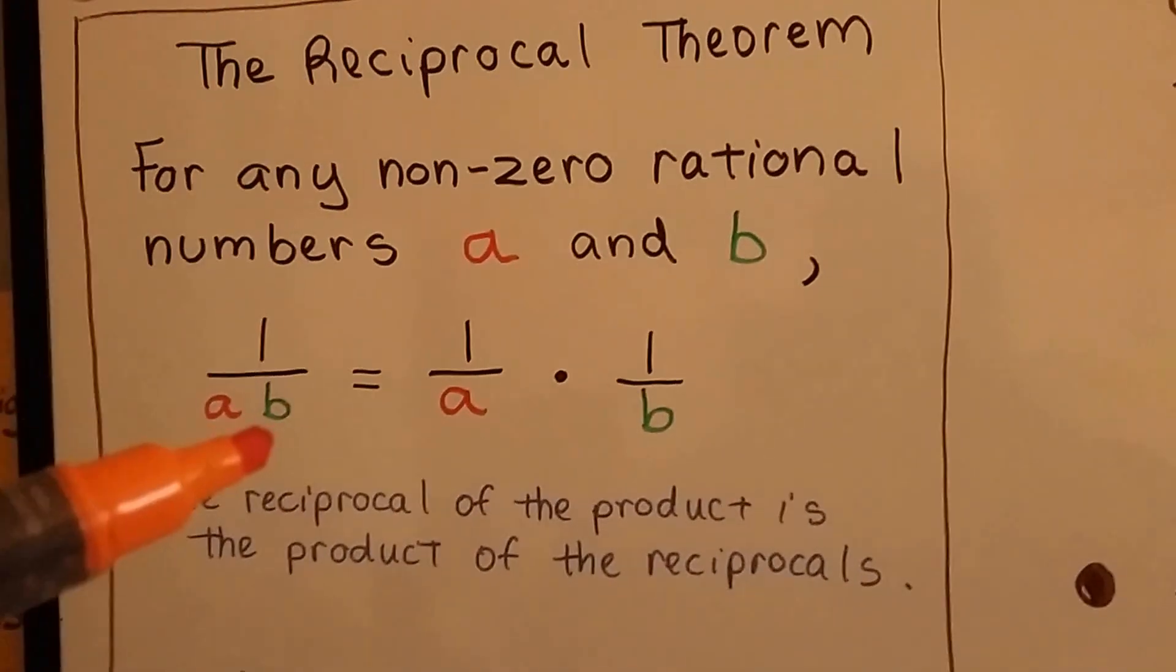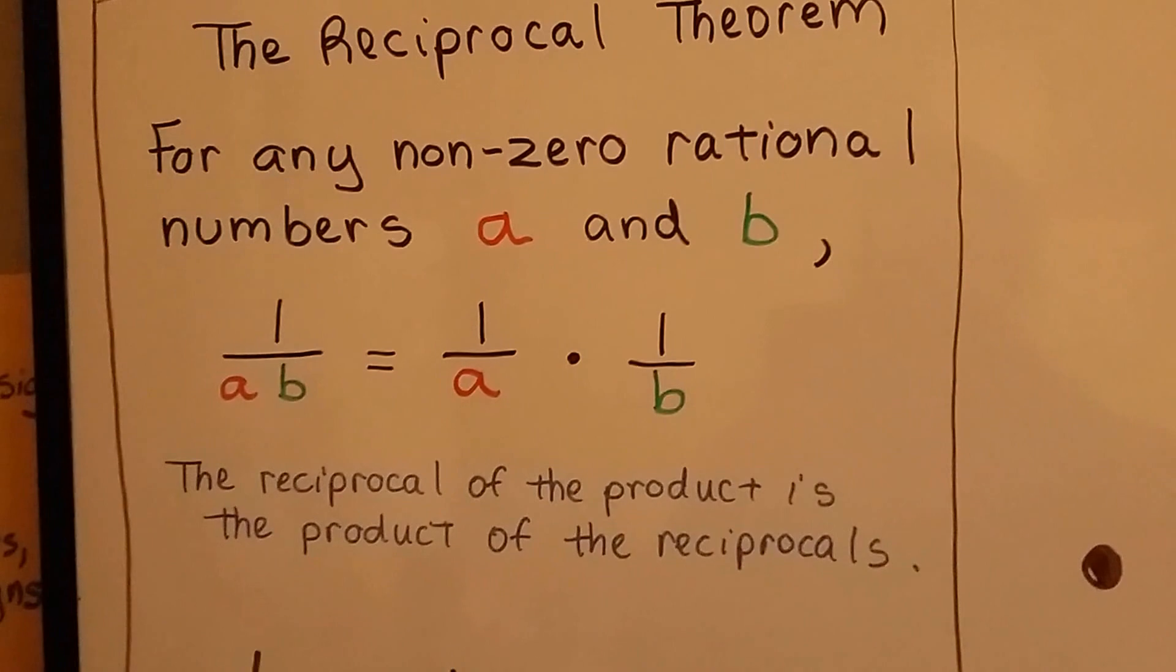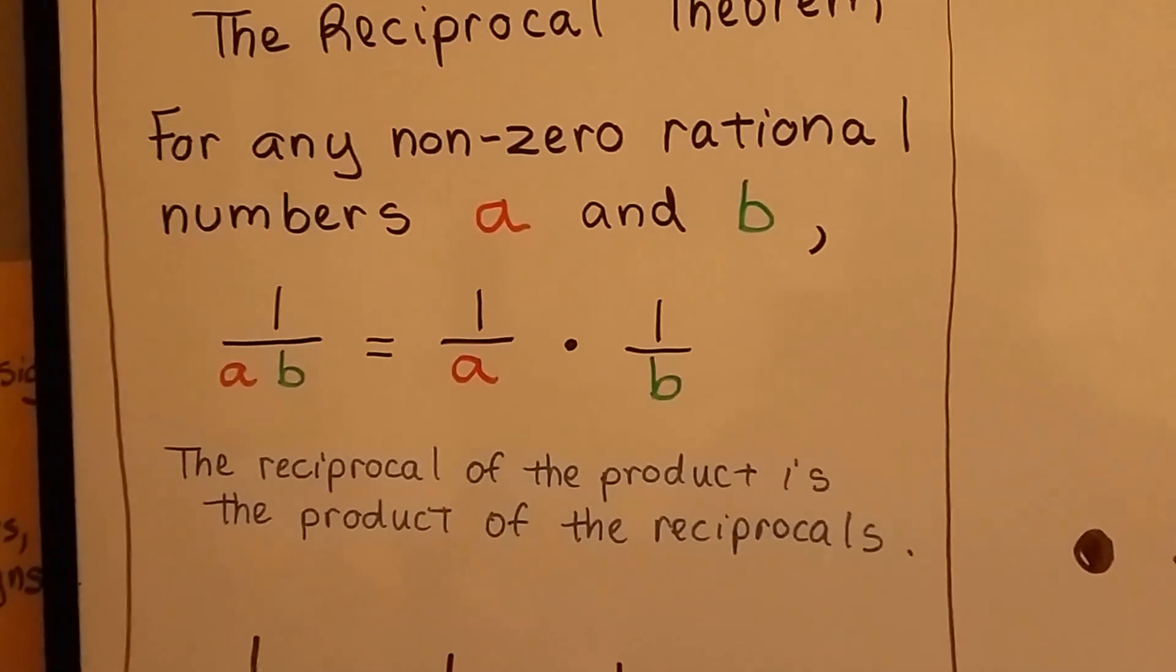If we have 1 over a times b, it's going to equal 1 over a times 1 over b. And the reciprocal of the product is the product of the reciprocals.